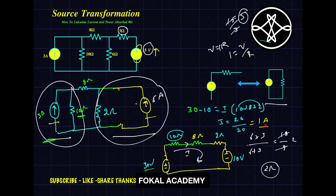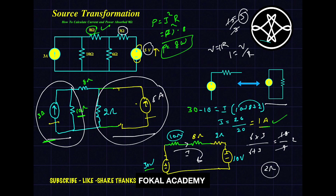Now for the power absorbed by the 8 ohm resistor, we use P = I²R. The current I is 1 ampere and R is 8 ohms, so P = 1² × 8 = 8 watts. This is the power absorbed by the 8 ohm resistor, and 1 ampere is the current passing through it. These are the required values for the given problem, obtained through the source transformation simplification process.